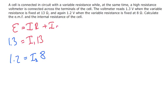So what's our current in the first scenario? Well, 1.3 divided by 13 is 0.1 amps. And then we've got 1.2 divided by 8 is going to be I2, the current in our second scenario, which equals 0.15.